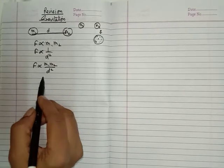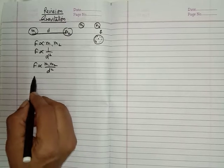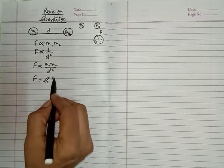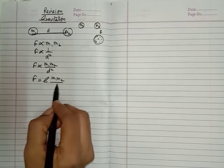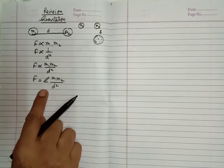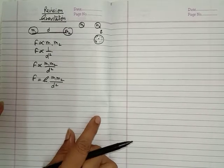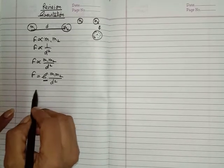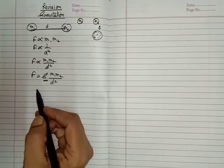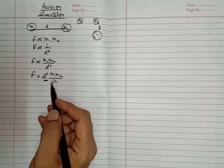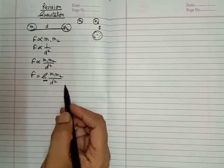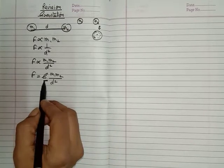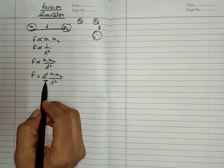We remove the proportionality sign by using a constant value G, so we can say F is equal to G m1 m2 upon d square. Now what is G here? G is called the universal gravitational constant. It is very important. It is called universal because anywhere in the universe the value of G is constant.